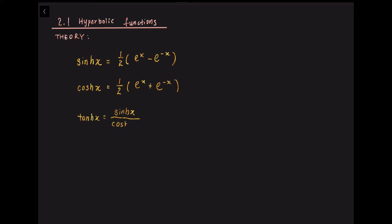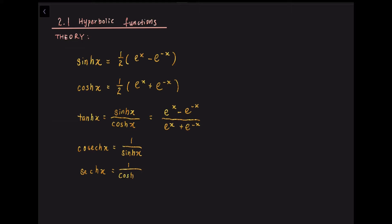In a similar manner to ordinary trigonometric functions, we have tanh(x) equals sinh(x) over cosh(x), which equals (e^x minus e^(−x)) over (e^x plus e^(−x)). We also have csch(x) equals 1 over sinh(x).